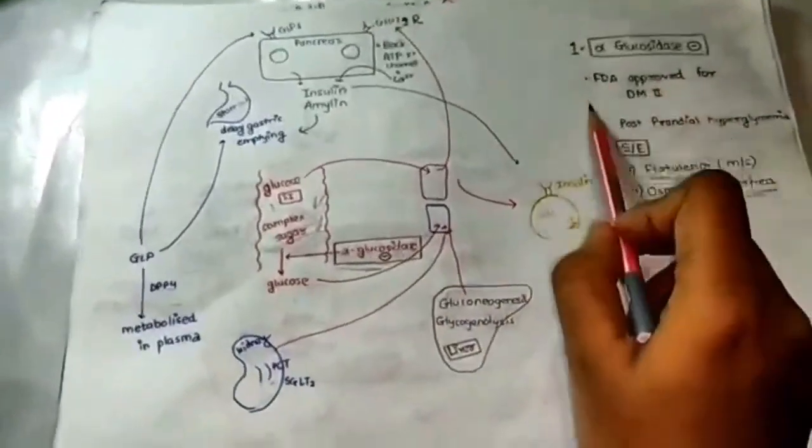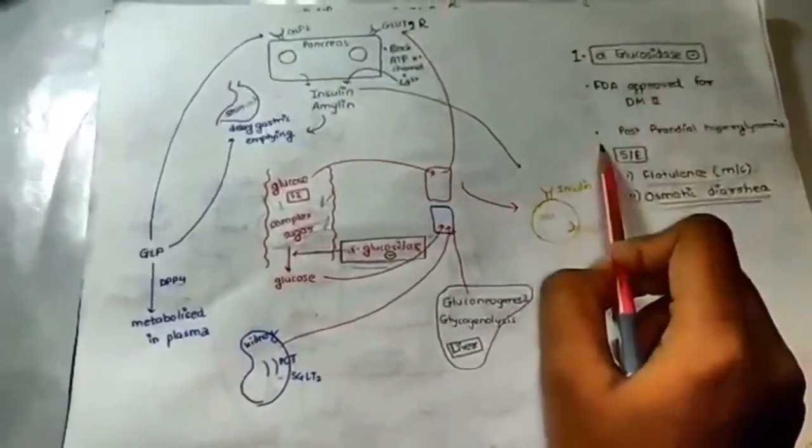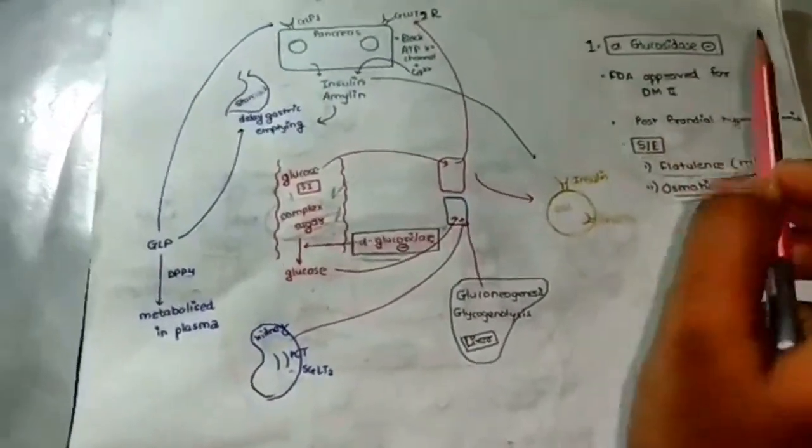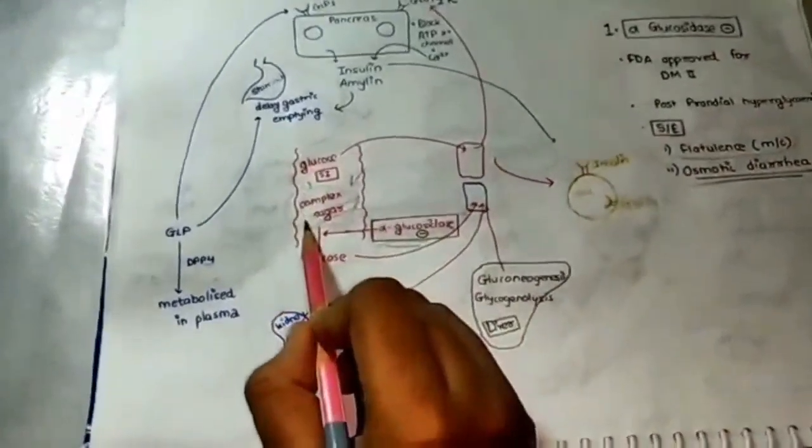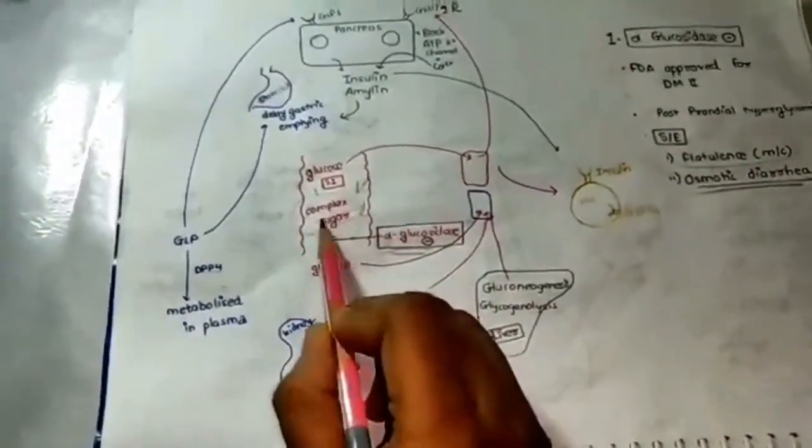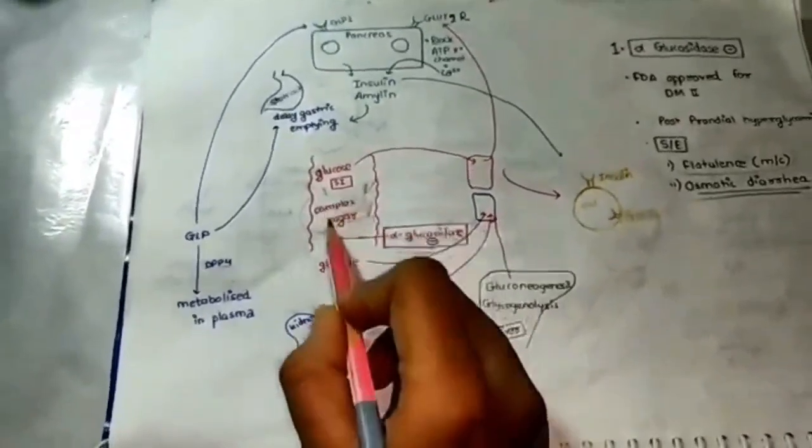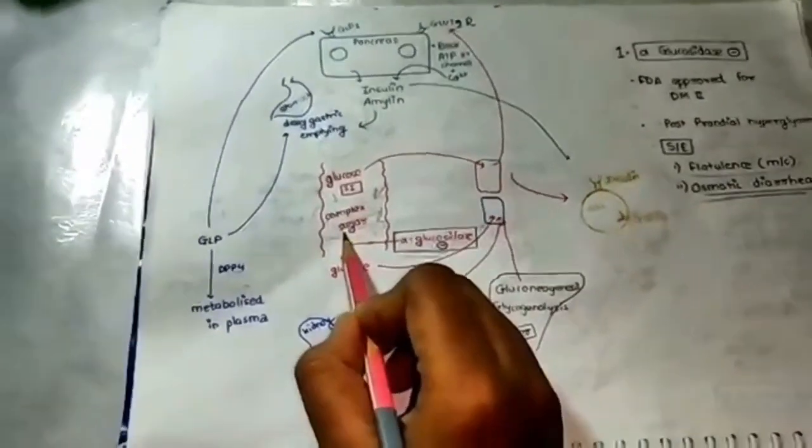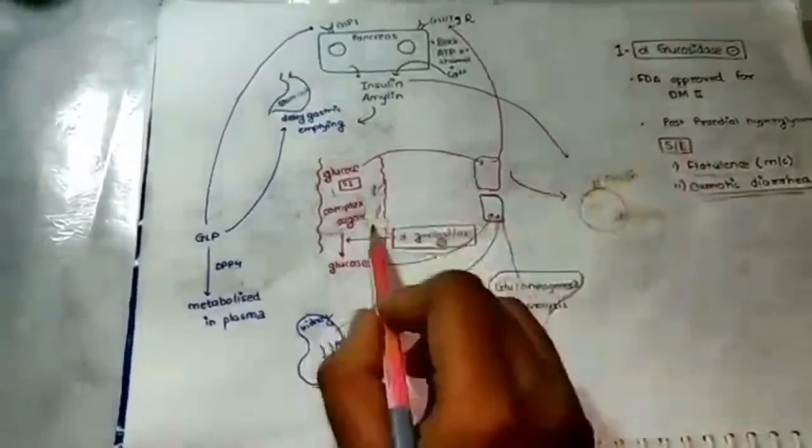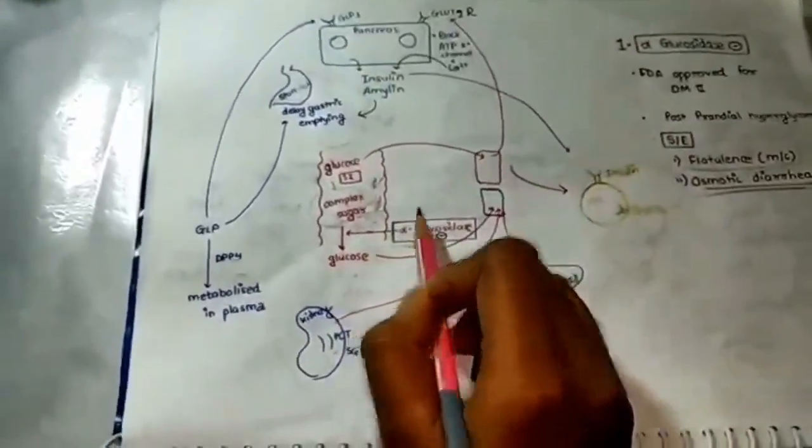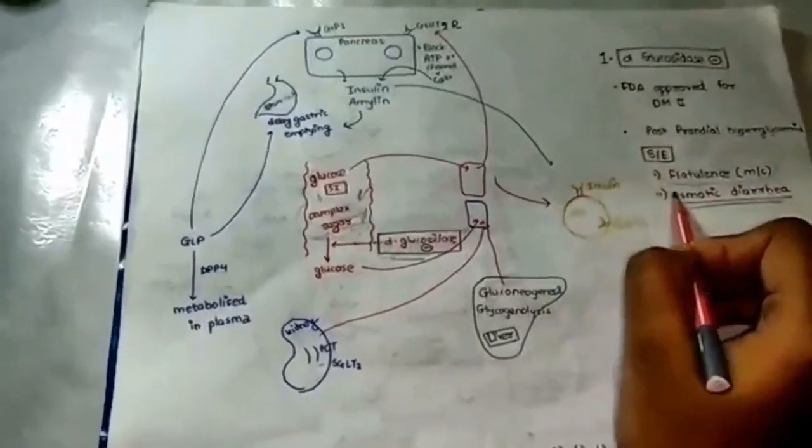It is FDA approved for diabetes type 2. It is helpful in postprandial hyperglycemia. But there are certain side effects of alpha-glucosidase inhibitor. Because this complex sugar is not getting converted into glucose, it is subjected to the gut bacteria. This gut bacteria will consume the complex sugar and release a lot of gas. Therefore, the most common complication is flatulence. Also, the complex sugar is osmotic, so it will also lead to osmotic diarrhea.